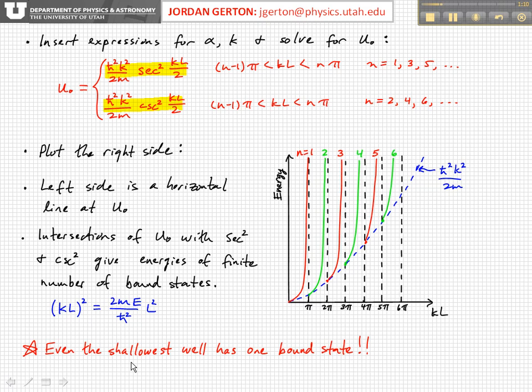You can find how many bound states there are simply by drawing a horizontal line which corresponds to u naught. If I have a u naught with this particular value of energy,